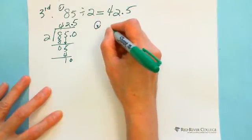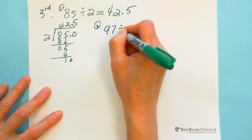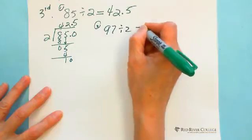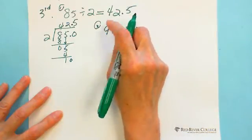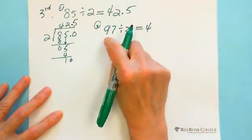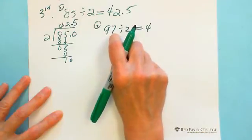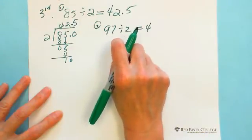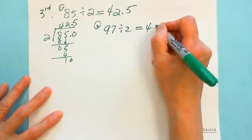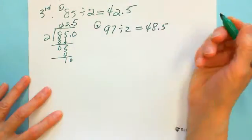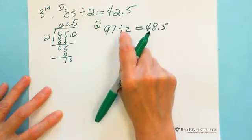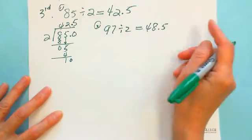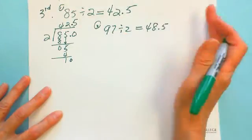Second example: 97 divided by 2. 1 smaller than 9 is 8, which is divisible — it's 4. Make 17; 16 is 1 less than 17, so that makes 8. And 0.5 because there's 1 remainder and we carry down 0 — so the answer is 48.5. Always 0.5.